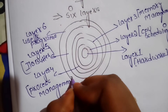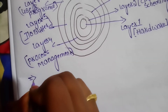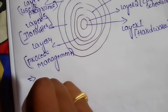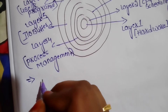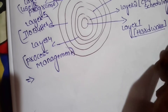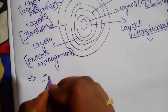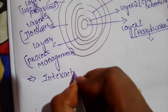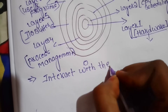First we go to the hardware layer. The hardware layer interacts with the system hardware, like keyboard, scanner, printer, and mouse, which give input and output by interacting with the system hardware.